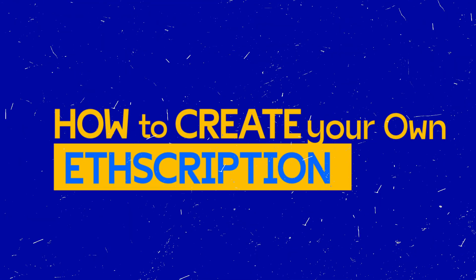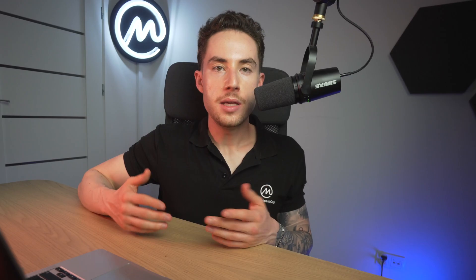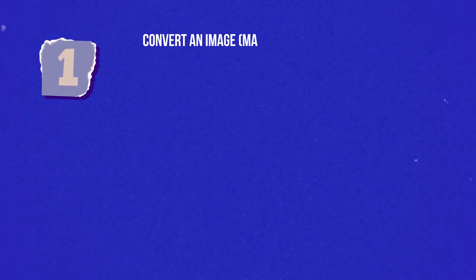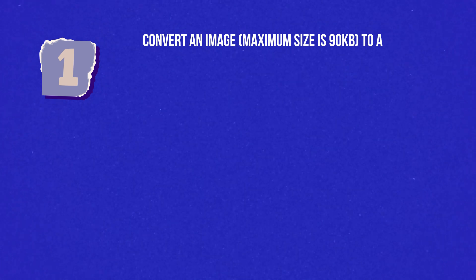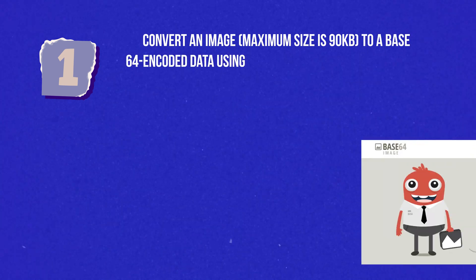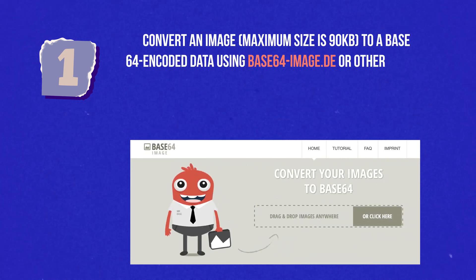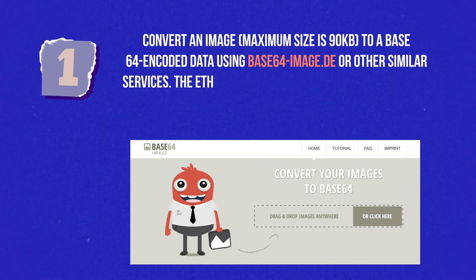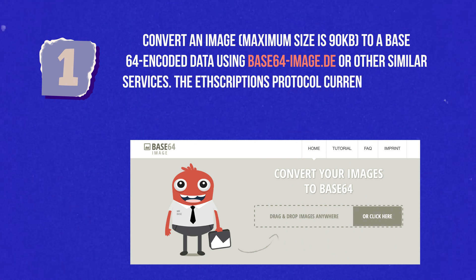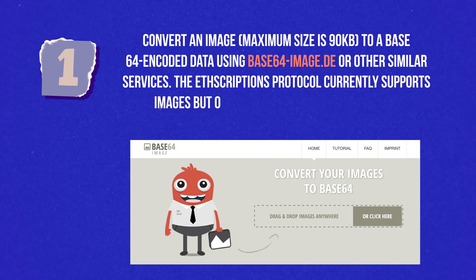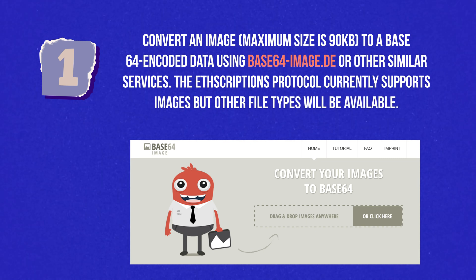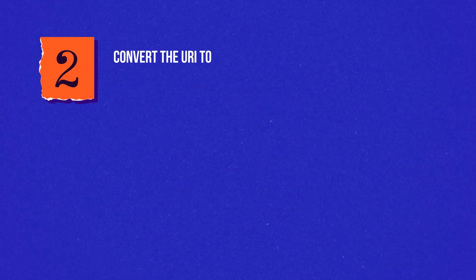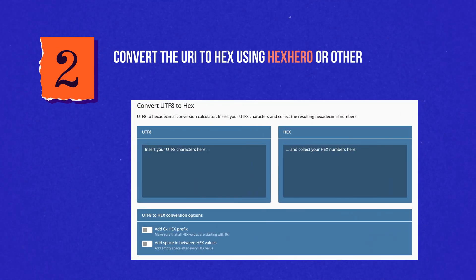Let's talk about how to create your own ETHSCRIPTION — it can be done within a minute. Number one: convert an image with a maximum size of 96 kilobytes to a Base64 encoded data URI using base64-image.de or other similar services. The ETHSCRIPTIONS protocol currently supports images, but other file types will be available. Number two: convert the URI to HEX using HexHero or other similar tools.